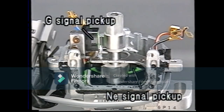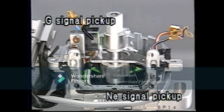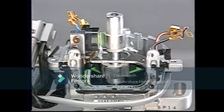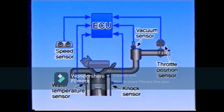In ESA, the distributor has two integrated pickup coils: one generates an engine speed signal, or NE signal, and the other generates a crank angle reference position signal, or G signal. While the engine is running, these signals are continually transmitted to the ECU. In the case of a D-type EFI engine, other sensors are provided for the ECU such as the vacuum sensor, throttle position sensor, knock sensor, water temperature sensor, and vehicle speed sensor.